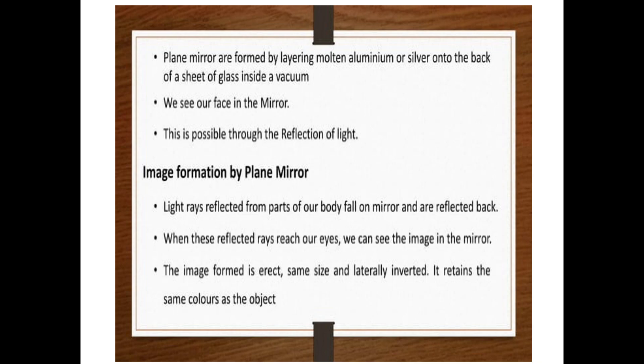Now how is the image formed in a plain mirror? Light rays reflected from parts of our body fall on mirror and are reflected back to our eyes. When these reflected rays reach our eyes, we can see the image in the mirror. The image formed is erect, same size, and laterally inverted. It retains the same colors as the object. Laterally inverted means we can see our left as in mirror it would be right and vice versa.